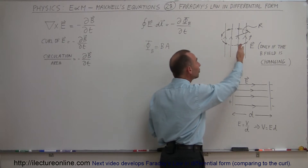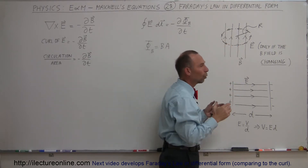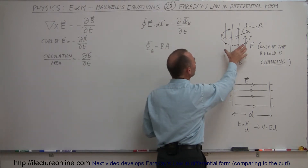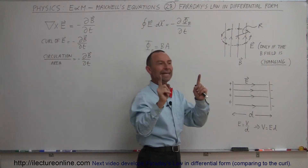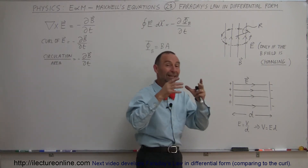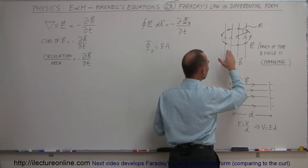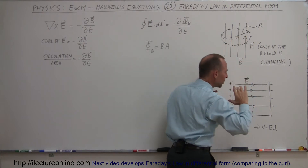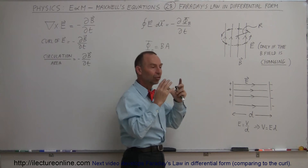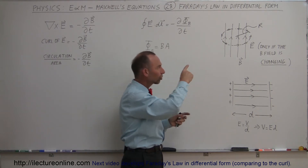If for some reason the B field is increasing — meaning more and more flux exists in that region — or the B field is decreasing — meaning less and less flux exists in that region — then there will be the presence of an electric field in a circular form. There doesn't need to be a wire or a conductor or anything like that. Simply, in a region where there's a magnetic field, when it changes, there will be an electric field present that is circular in nature.